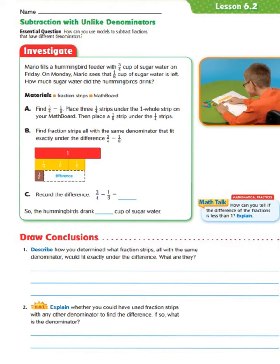We're going to do like we did for Lesson 6.1. Even though it's talking about utilizing fraction strips, we're going to skip over that and go straight to the subtraction with unlike denominators. So let's look at our word problem for our investigate.